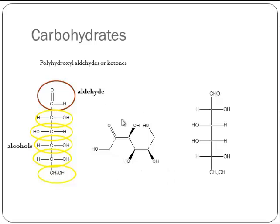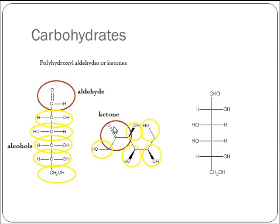Let's check this one out. Here we have C double bond O — C, C — that's a ketone. Then we have a whole host of alcohols. Polyhydroxyl ketone — that's a carbohydrate.